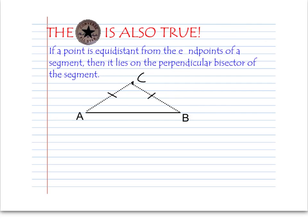It turns out the converse is also true. If a point C is equidistant from the endpoints — equidistant from A and B, the endpoints of that segment — then it must lie on the perpendicular bisector of the segment. So I know from this theorem that since C is equidistant from A and B, if I were to draw the perpendicular bisector of AB, it would go right through C.